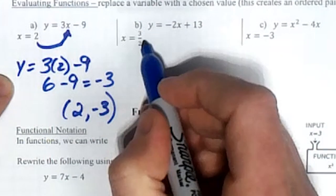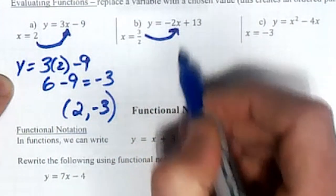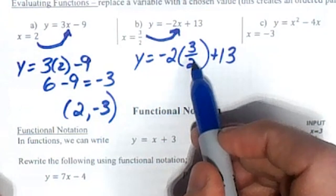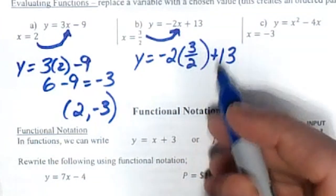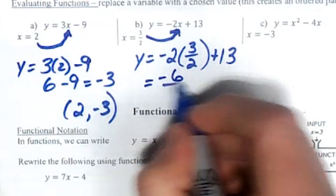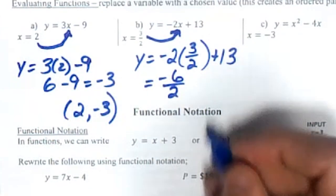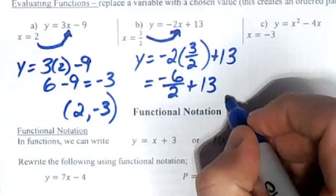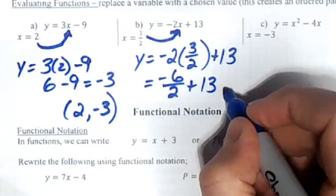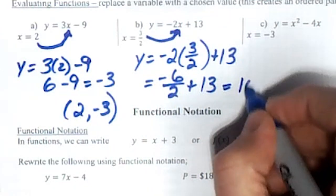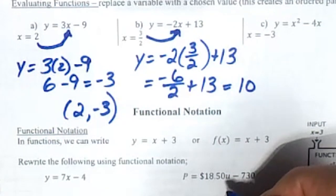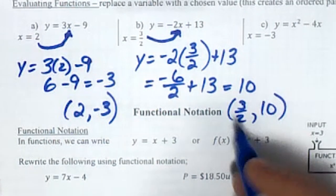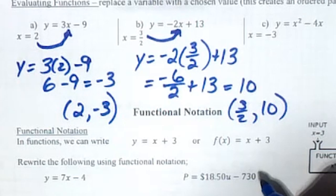Let's try this one. This time we have a fraction. We're going to plug it in. When we multiply by a fraction, we're going to multiply the top: negative 2 times 3, and then we can divide by 2. So this becomes negative 3 plus 13 and we get 10. So our ordered pair - we started with 3 halves. This is my x. This is my y. That's what we're trying to do.